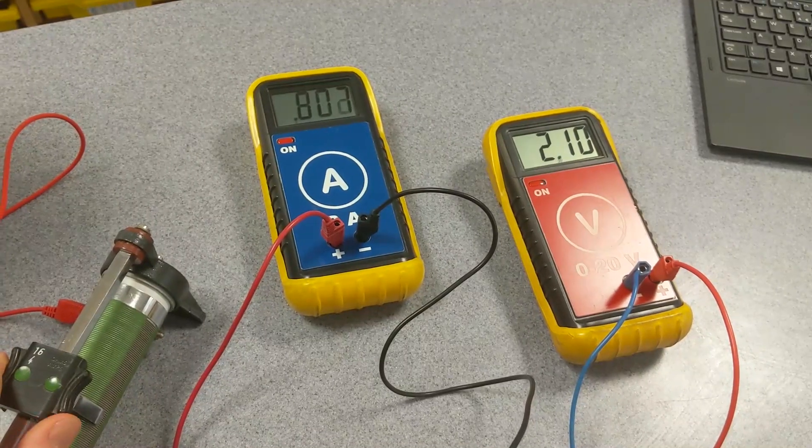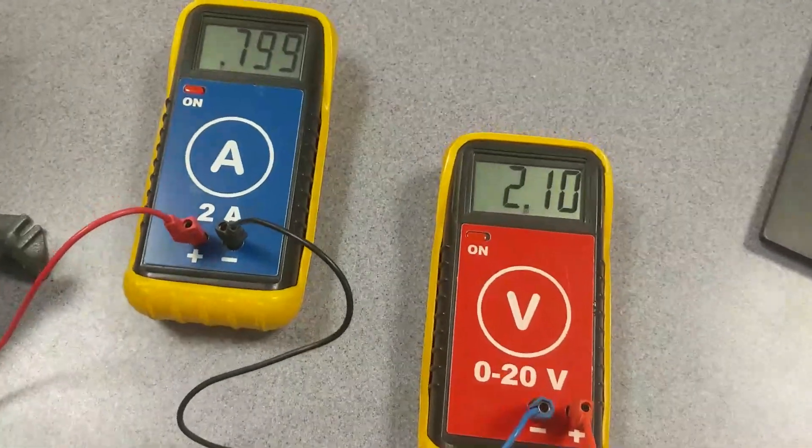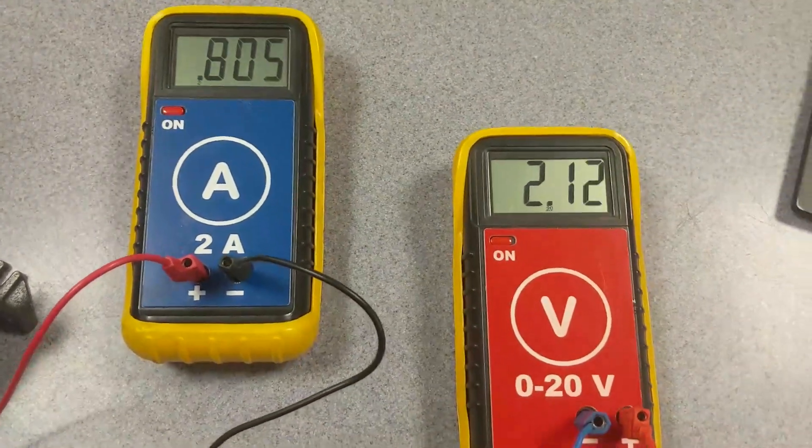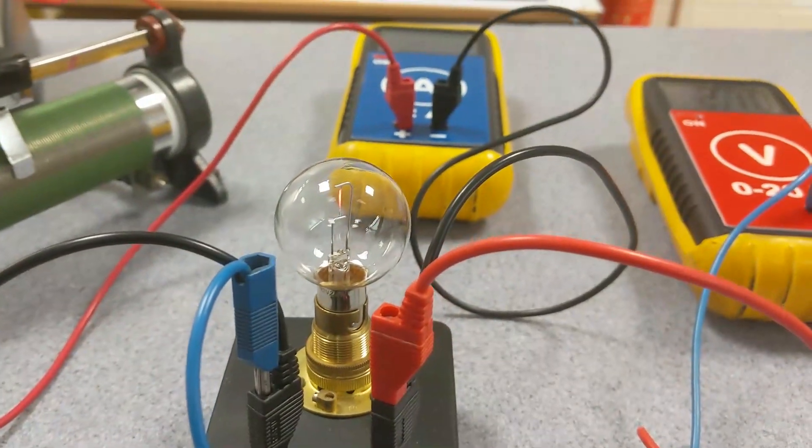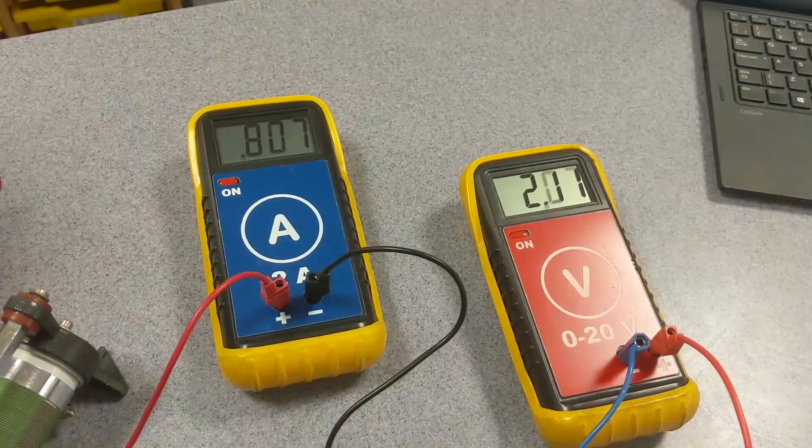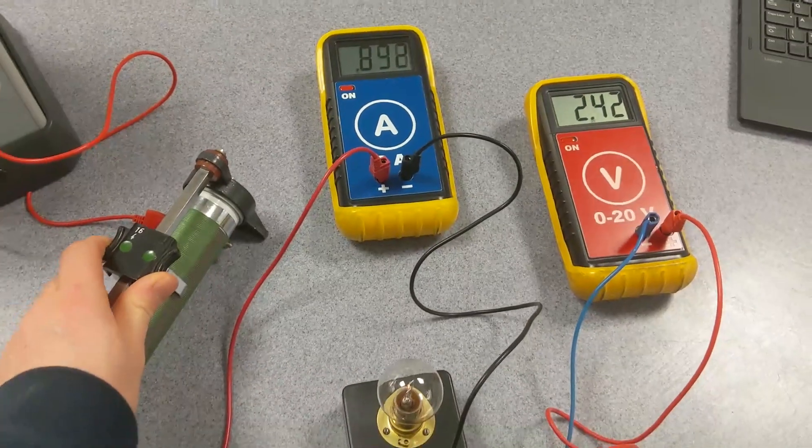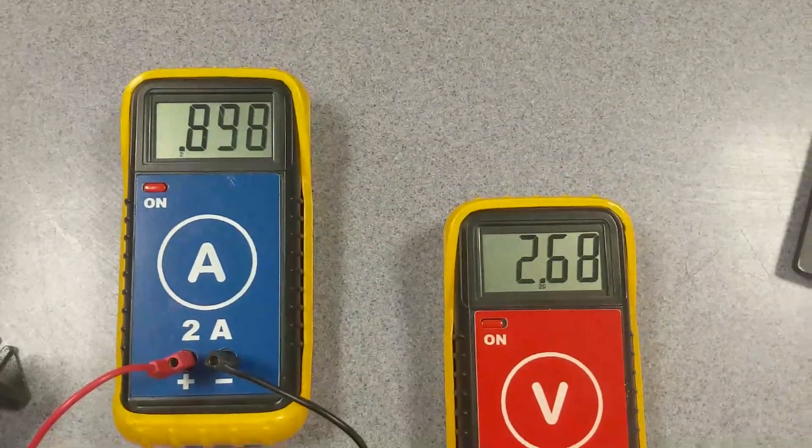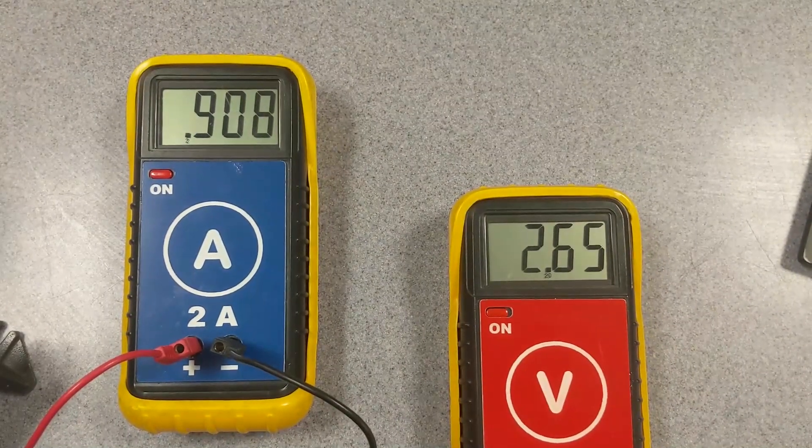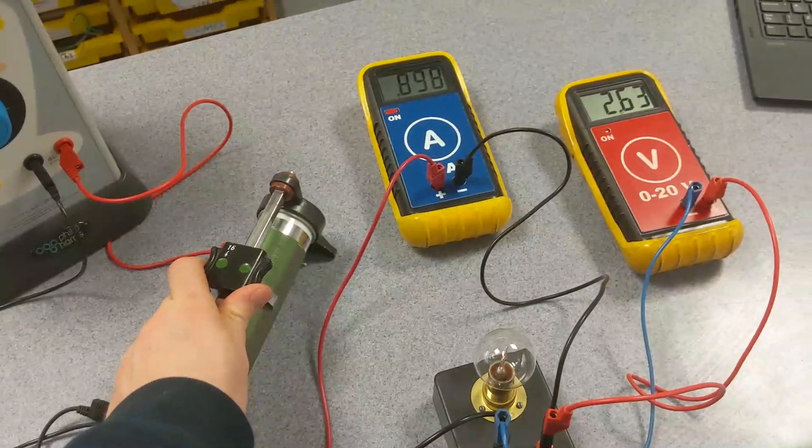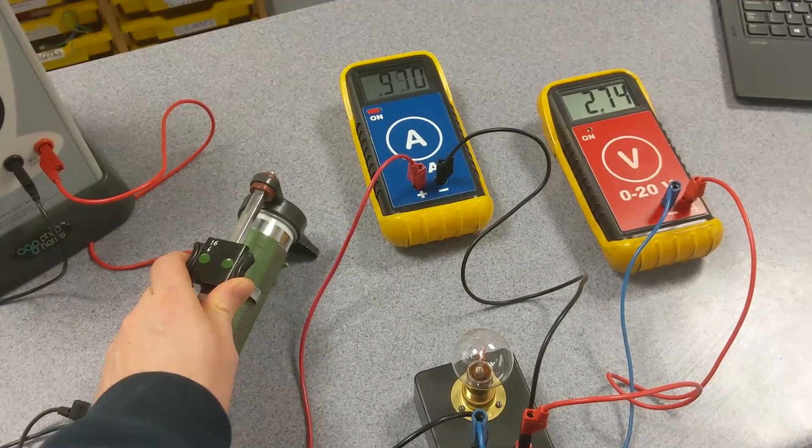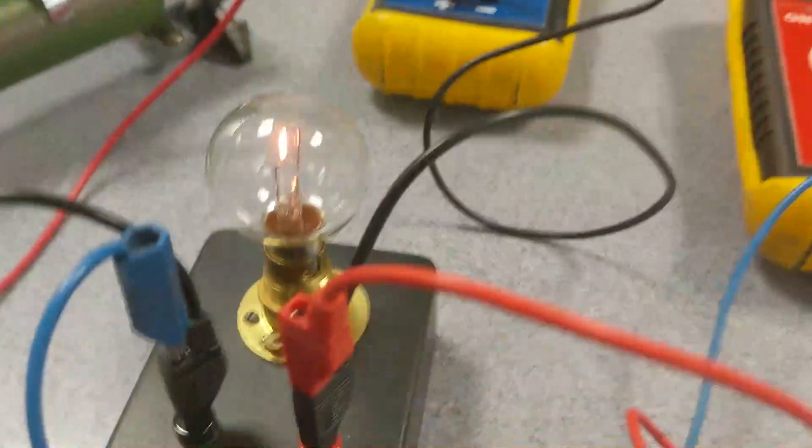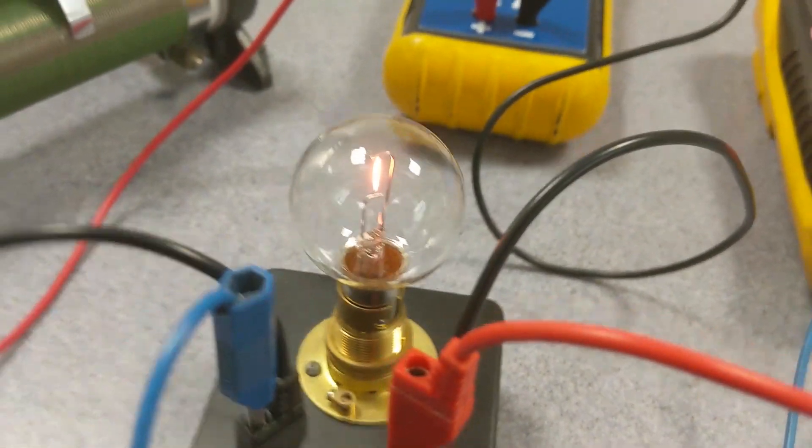Push this up to 2 volts. Close enough, let that settle. And the filament bulb is starting to light properly now. Push this up to 2.5, push it up to 2.6. Push it up to 3, close enough. Okay. The bulb is well and truly starting to light now. That's excellent.